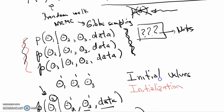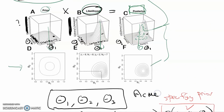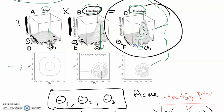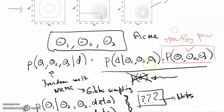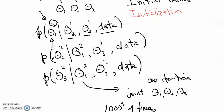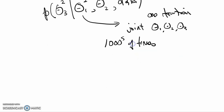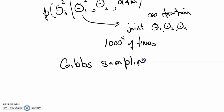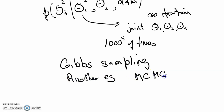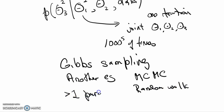After repeating thousands of times, what we wind up with is the posterior distribution — except now we have not just two values of theta but multiple values. This is an example of Gibbs sampling, which is just another example of Markov chain Monte Carlo random walk that is particularly relevant when we're dealing with more than one parameter.